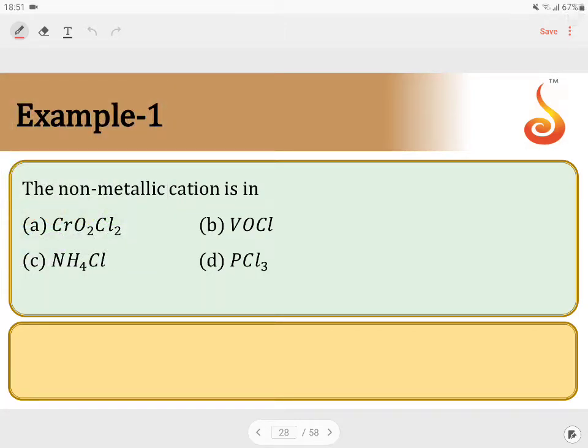Example number 1. The non-metallic cation is in - they have given 4 compounds. In which case we can see a non-metallic cation.